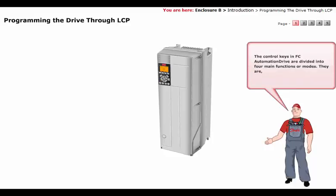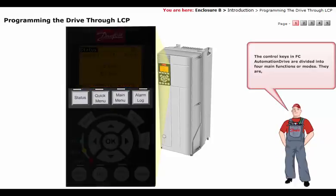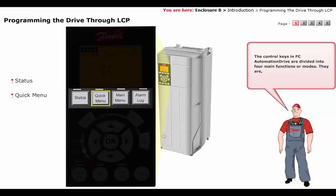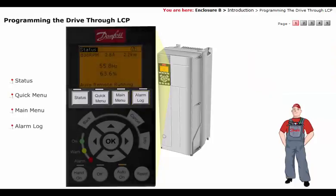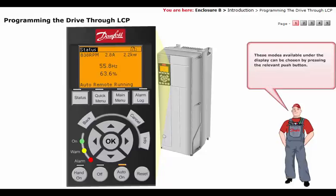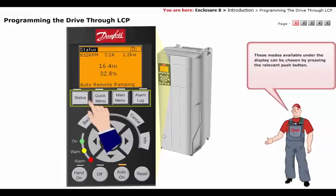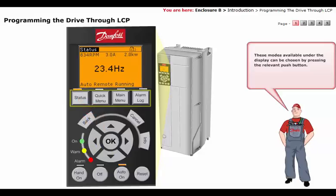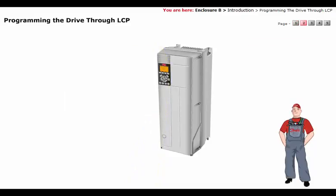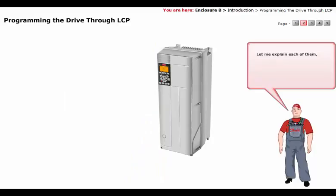The control keys in the FC Automation Drive are divided into four main functions, or modes. They are: Status, Quick Menu, Main Menu, and Alarm Log. These modes, available under the display, can be chosen by pressing the relevant push button. Let me explain each of them.